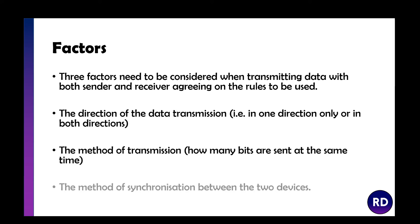Three things need to be considered when transmitting data, and both the sender and the receiver need to agree on the rules. First, we need to decide the direction of the data — is it going in one direction only or both directions? Second, how many bits are we going to send at the same time? And third, how is the data going to sync between the two devices?